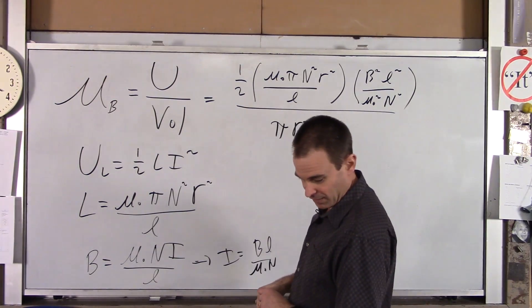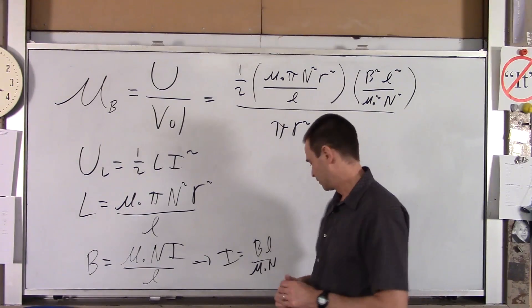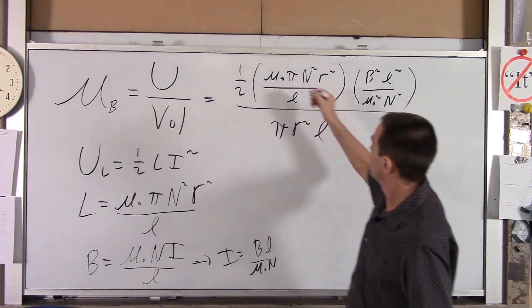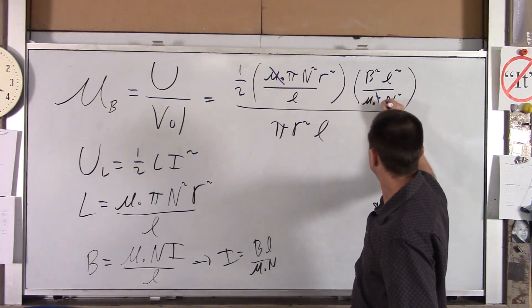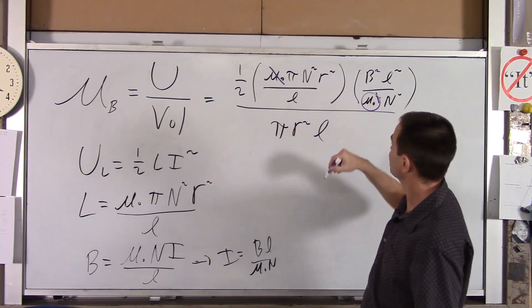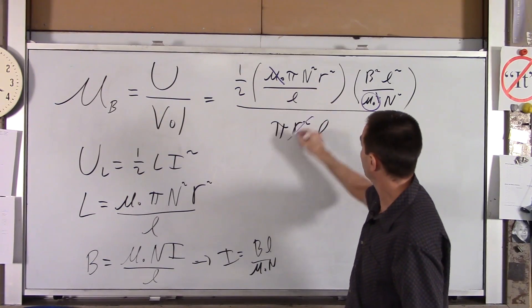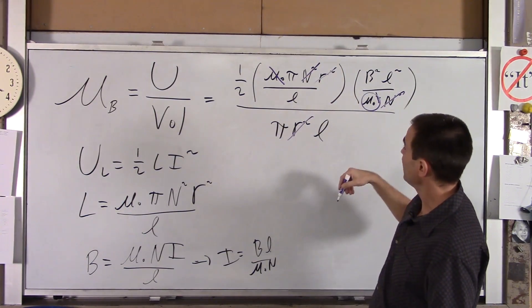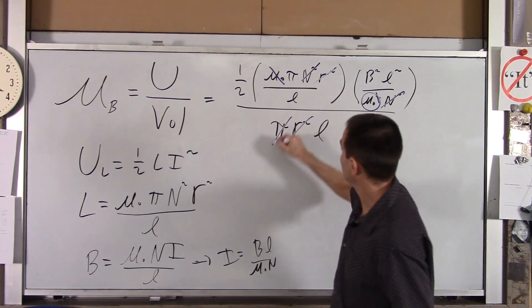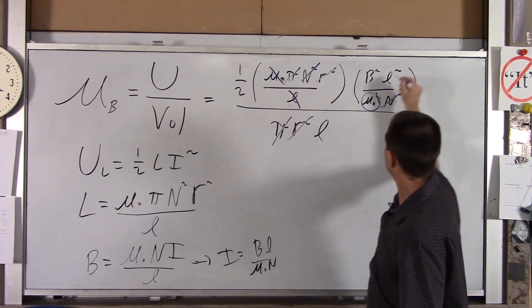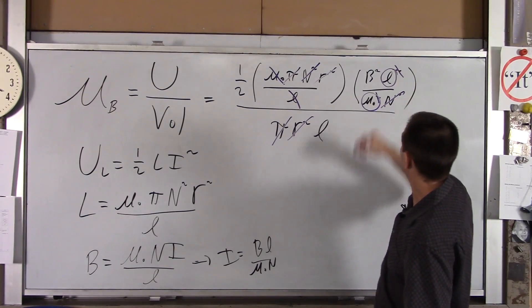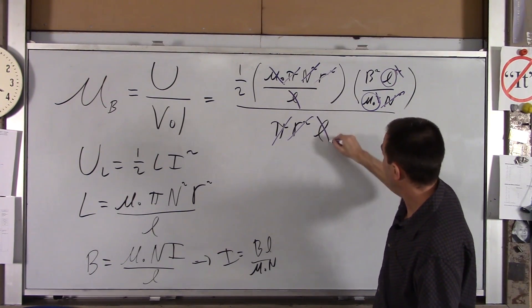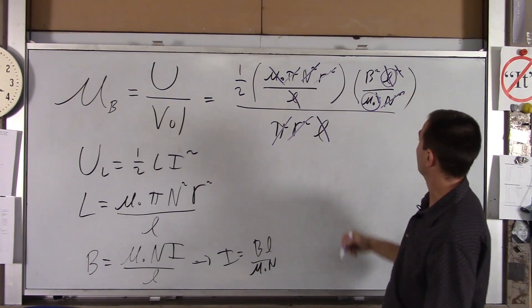Now, a lot of stuff is going to cancel here, thankfully. So let's start with this. That μ naught and one of those goes away. We've got one left over. This R squared and that R squared go away. This N squared and that N squared go away. This π and that π go away. That L and one of these cancels. We've still got one left. And then that L and that L cancel. So we're gone with that.